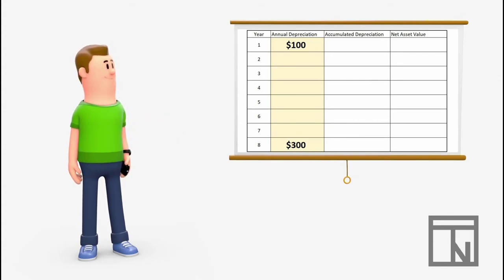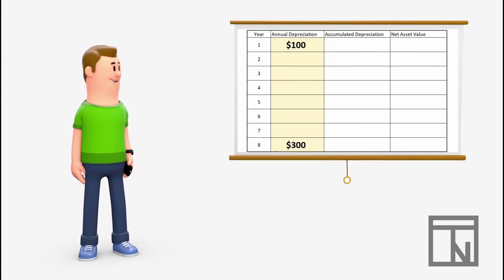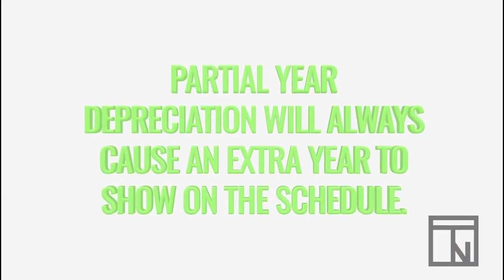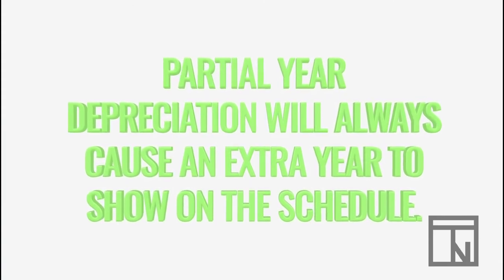He only got to depreciate $100 the first year. The rest of the $300 will be recorded in year 8. So don't let the extra year confuse you, it's just there to finish up the last of Bob's partial year depreciation.